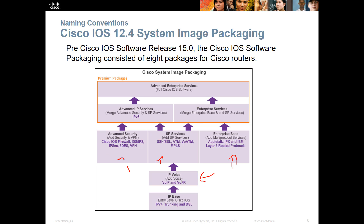The advanced security adds things like firewalls, IDS, IPS, IPsec, 3DES, and VPNs. All of them lead to a tier structure — tier 1, tier 2, tier 3, tier 4. You have to get a tier 2 license to be able to get a tier 3 license. That allows you to get the appropriate additional features, like merged advanced security and SP services. This is a more advanced version that includes IPv6. Enterprise services are a merged enterprise base with service provider. The fourth tier is everything. You pay for the services that you need, and this is according to release 15 IOS.